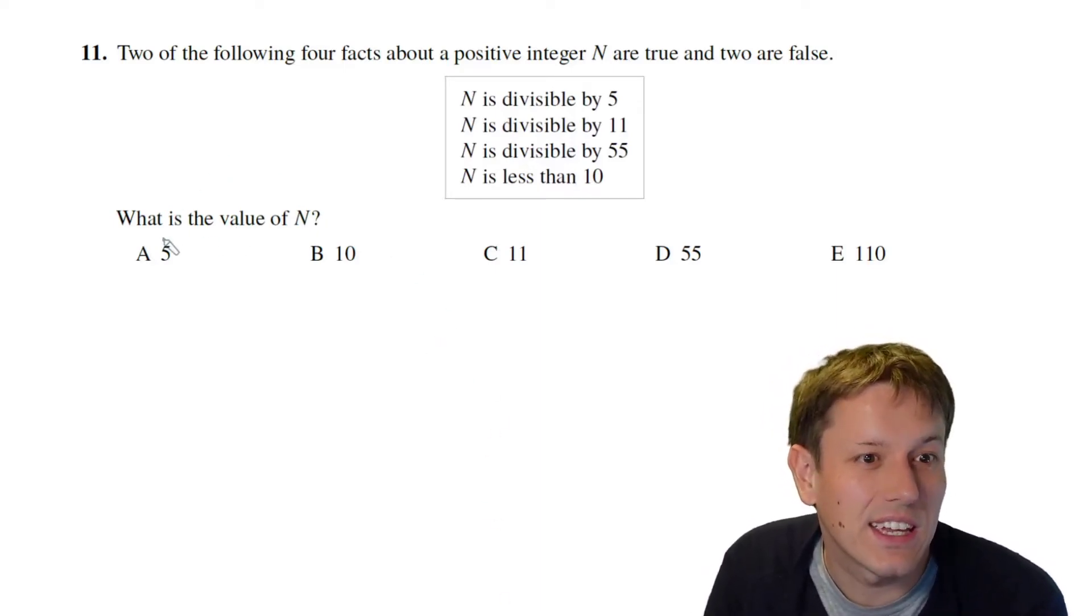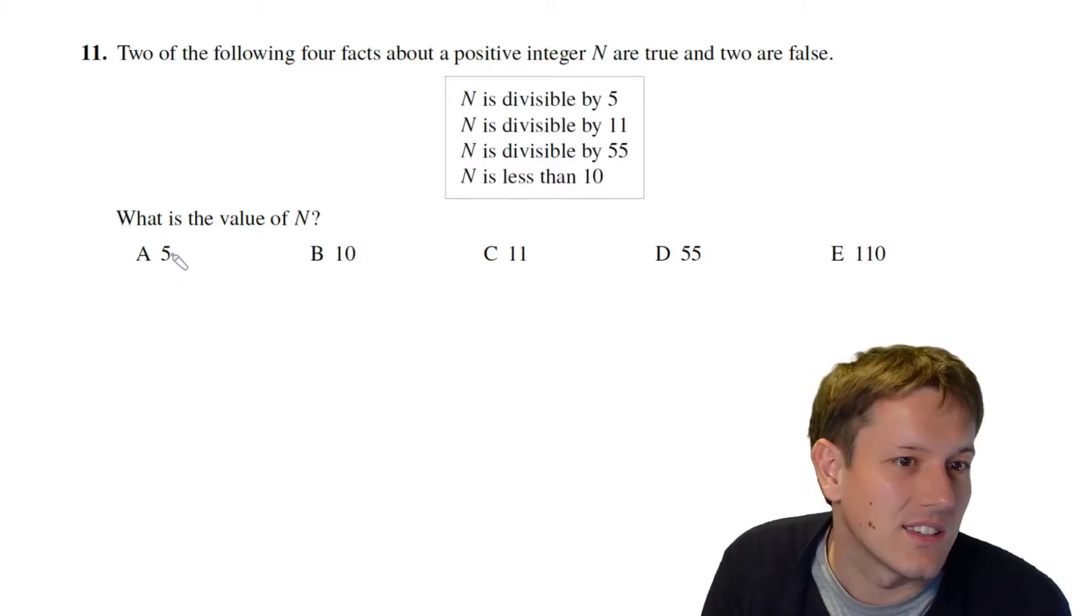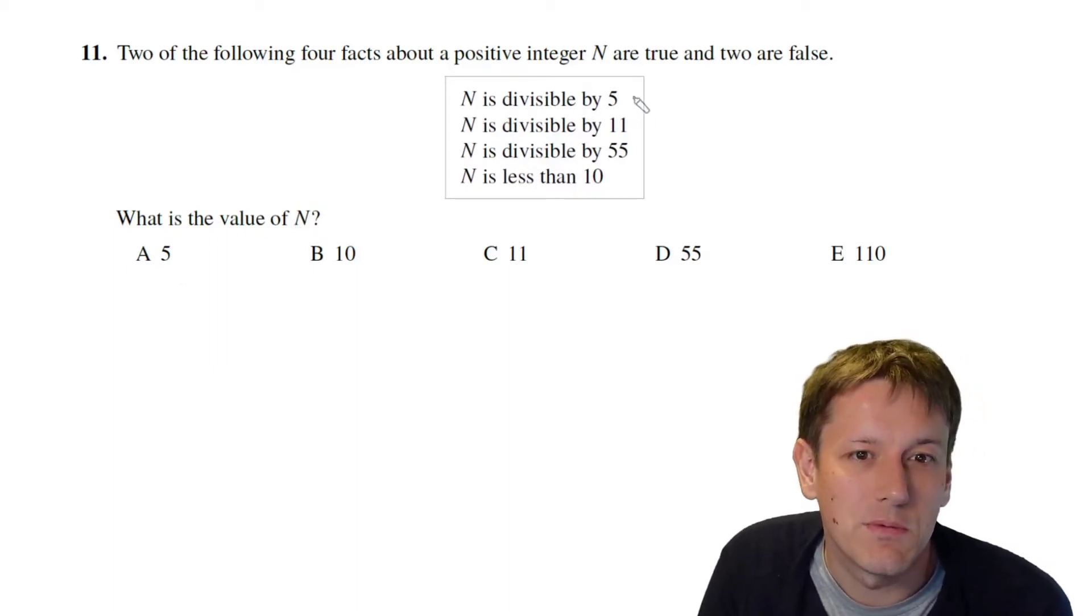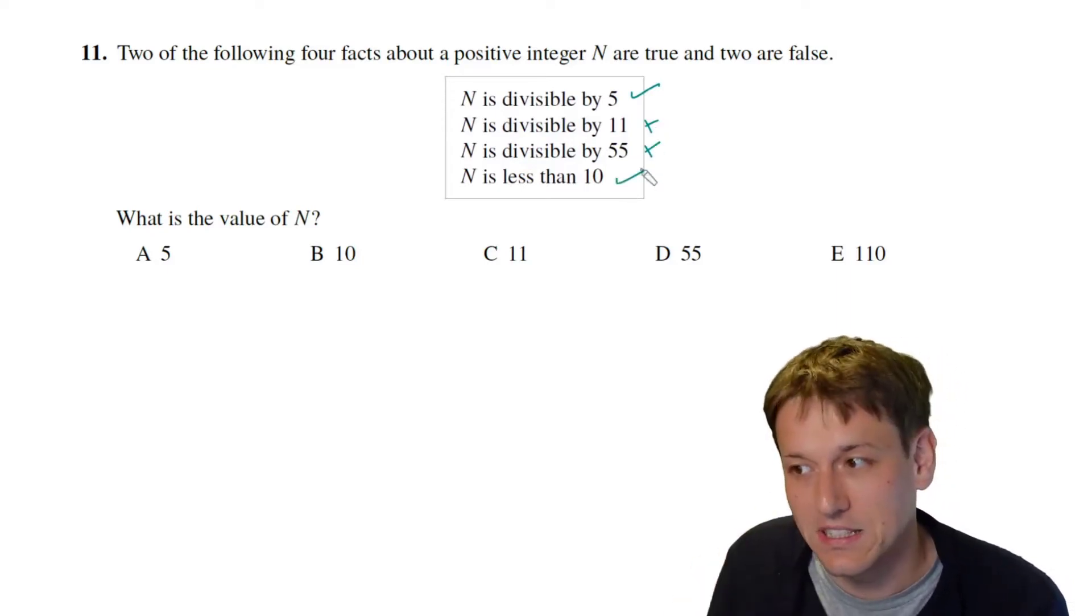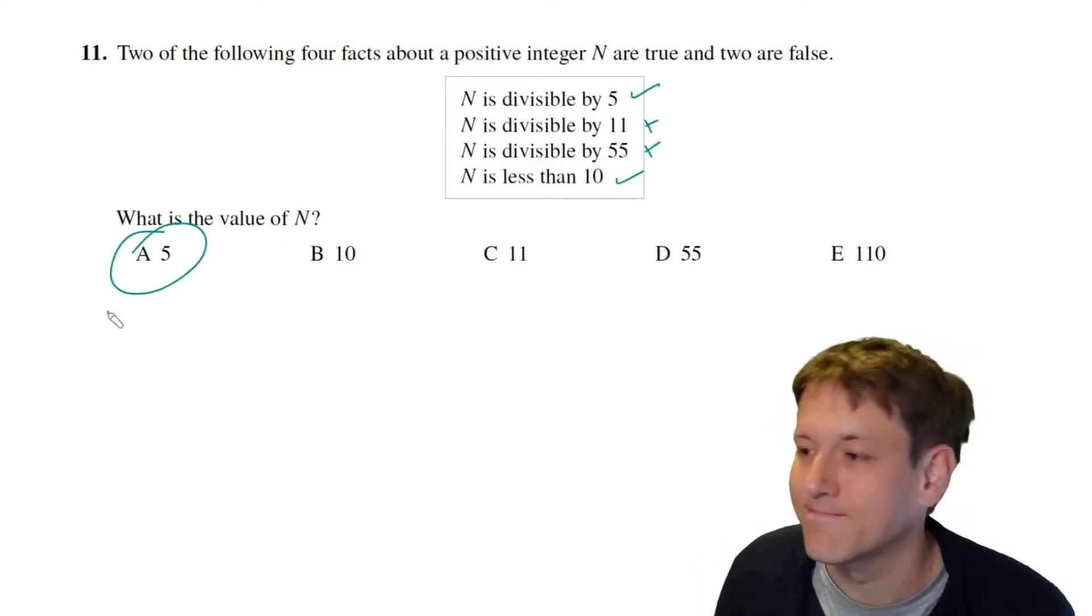I just start checking okay so I look at is the answer A, 5. Well 5 is divisible by 5 yes, it's not divisible by 11, it's not divisible by 55, and it is less than 10 so that's the answer.